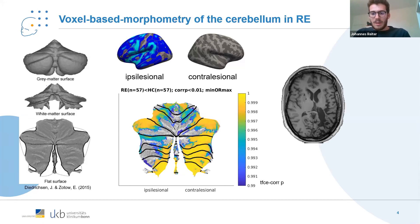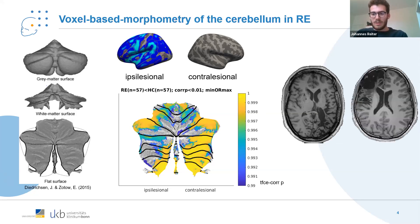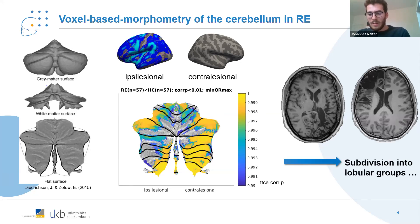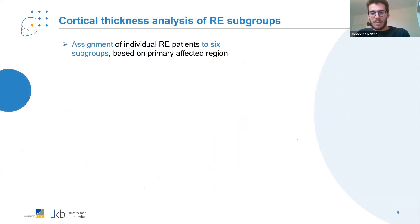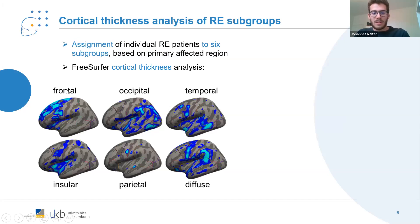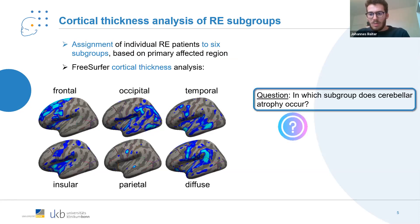Another observation was that individual patients sometimes differ greatly in the regional affection of atrophy within the brain. For example, here you can see a patient who is affected very much on the occipital side of the brain, while this patient is affected on the frontal lobe. Therefore we subdivided our patient group into six subgroups and repeated the cortical thickness analysis.